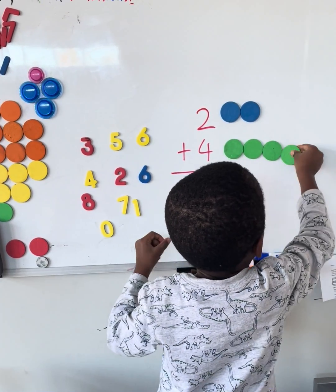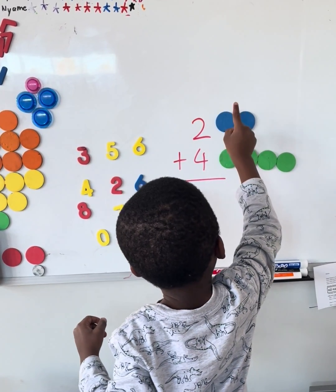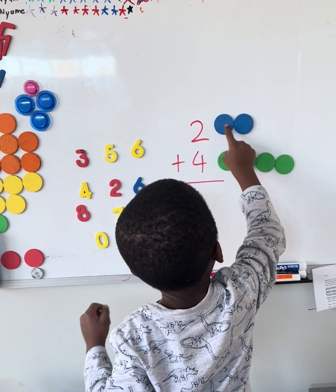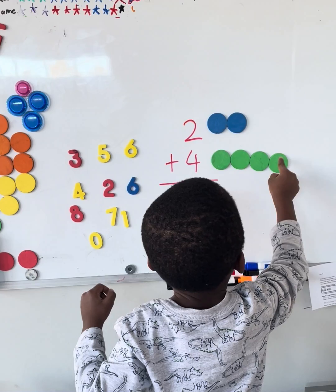So the next part is critical. So once he's put everything together, even if he knows the answer, I always emphasize that he counts. One, two, three, four, five, six. Six.